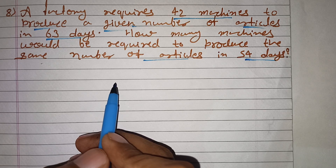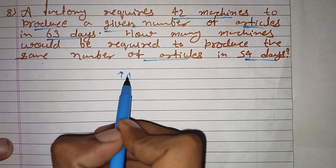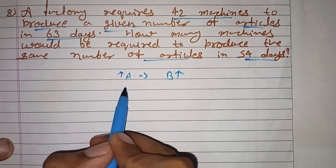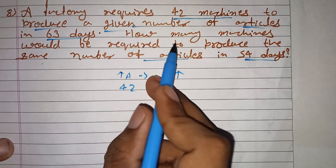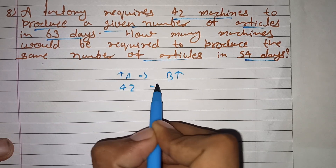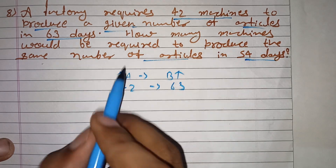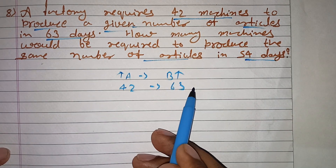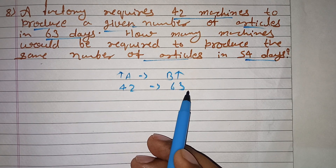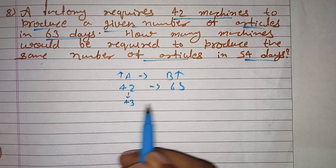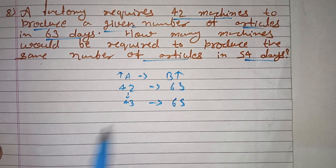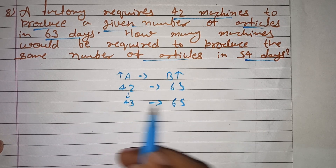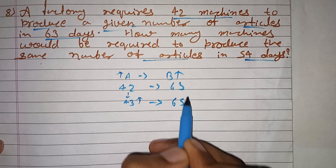You have to understand the relation. In direct proportion, if the amount of A increases, the amount of B also increases. Like, if there are 42 machines and 63 days, a certain number of articles are made. If machines increase to 43 and days increase to 65, machines have increased and days have also increased — that would be a direct relation.